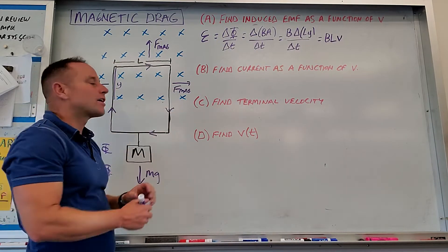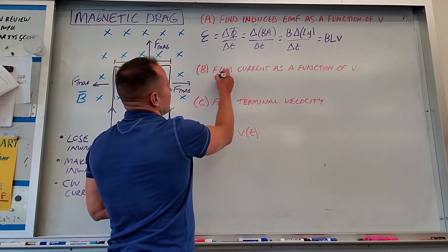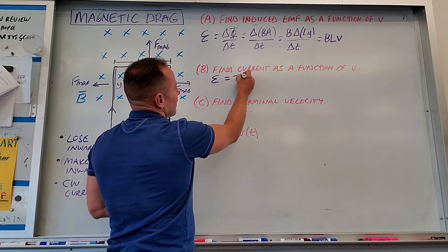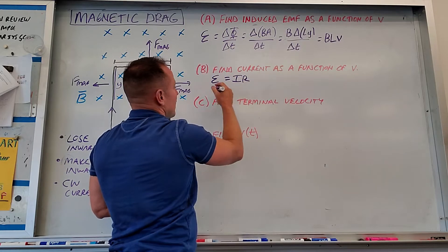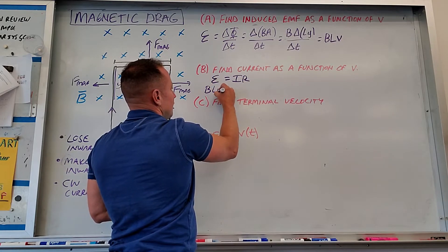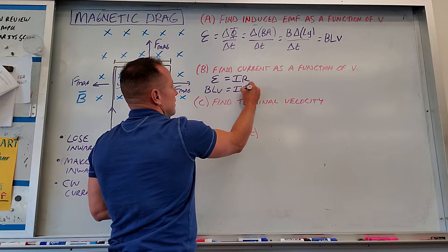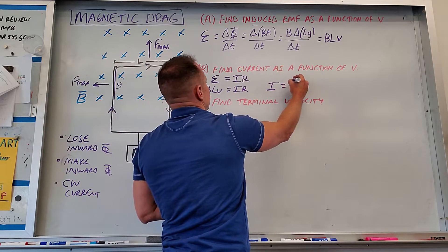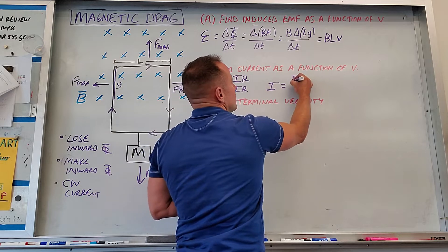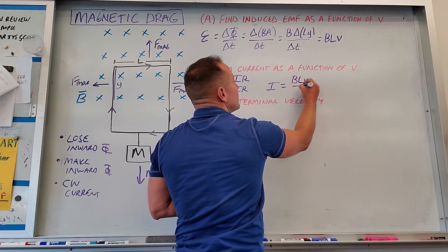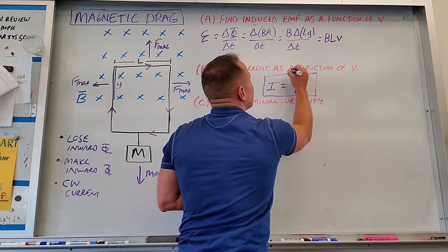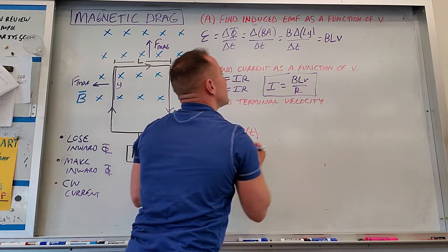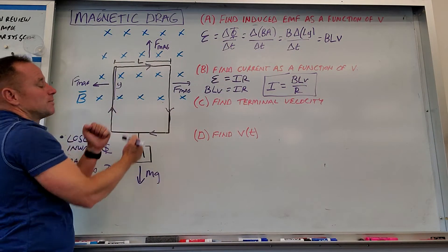Next, we're supposed to find the current. That's just Ohm's law. E equals IR. All we have to do is divide that expression BLV by the resistance. And so what we learn is the current itself then is going to be BLV over R. So the current itself is going to depend on how fast you're going. So that's the current as a function of how fast we're moving.